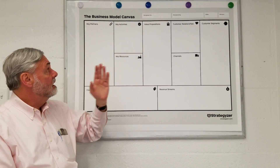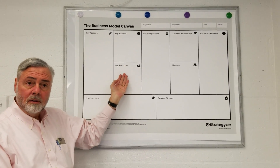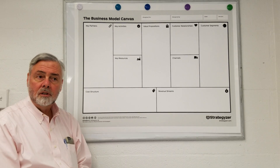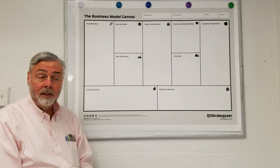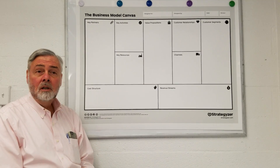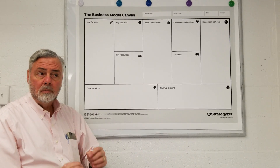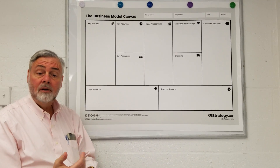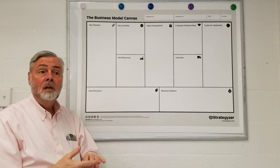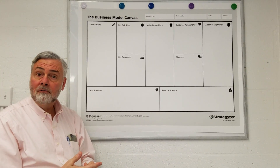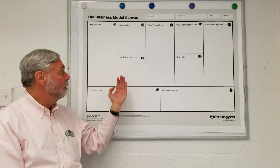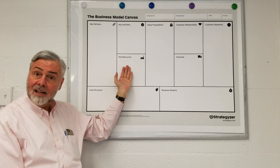Next is key resources — what are the things you need to own or have control of within your venture to make it successful? This might be intellectual property, and it's probably going to be human resources. If there are specific skills you need — web development, sales and marketing, search engine optimization, manufacturing, or some kind of technological skill — those belong in the key resources section inside the venture.